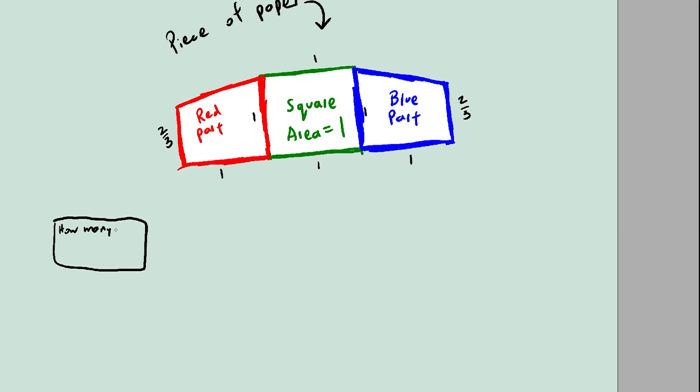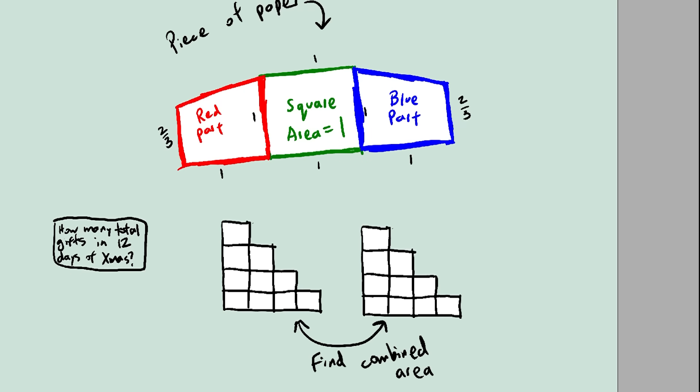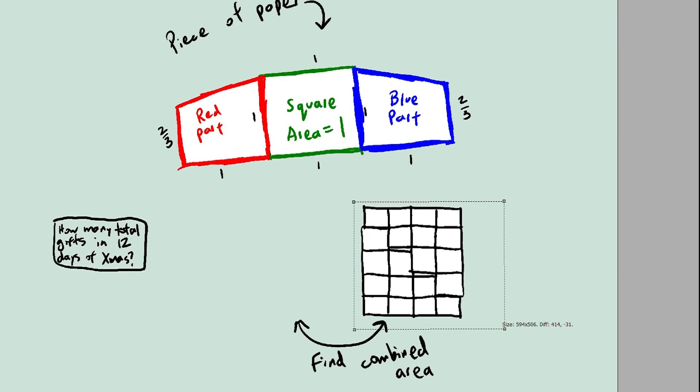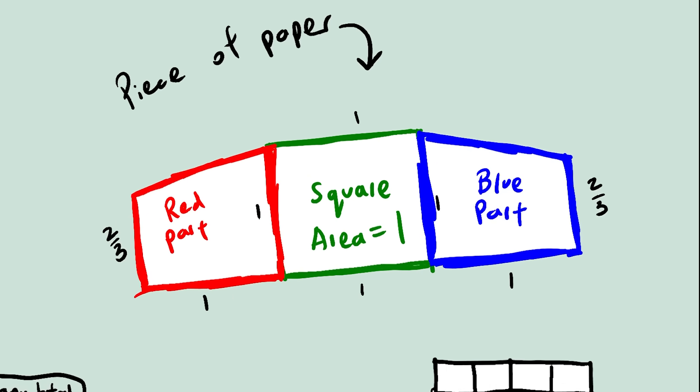Two videos ago we had a similar scenario where we wanted to find the combined area of these two shapes. And what we did was rotate one of them, and it ended up forming a nice rectangle with the other piece. And so the combined area was simply 4 times 5. Can we do the same thing here?